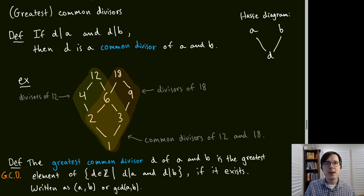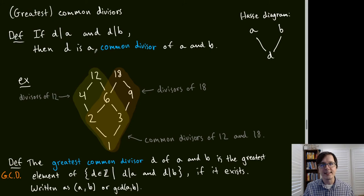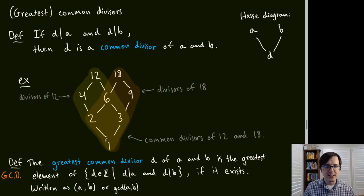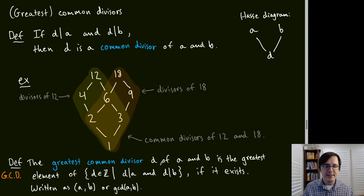Returning to our goal of understanding the Hasse diagram for divisibility: if D | A and D | B, we call D a common divisor of A and B. The greatest common divisor (GCD), written (A, B) or gcd(A, B), is the largest common divisor if it exists. For example, the common divisors of 12 and 18 are 6, 3, 2, and 1, so gcd(12, 18) = 6.